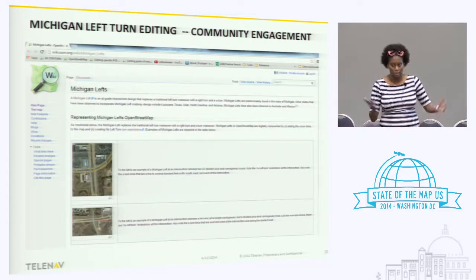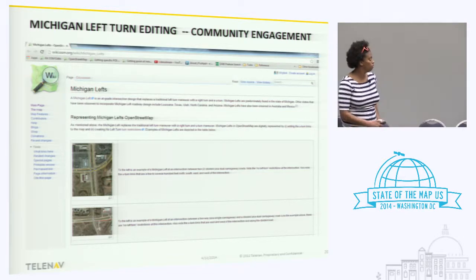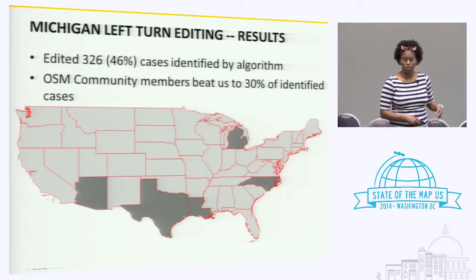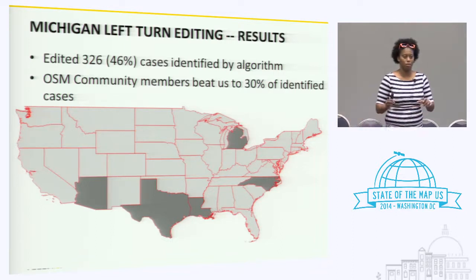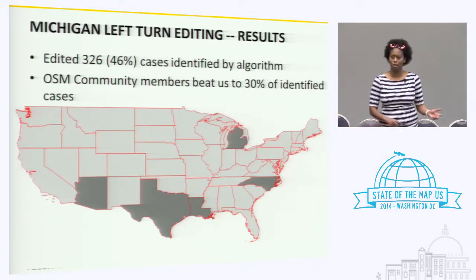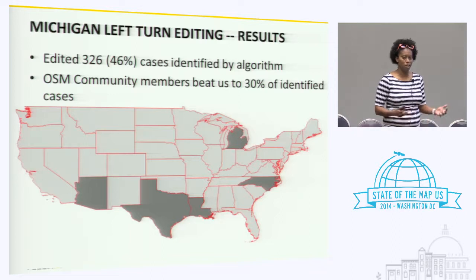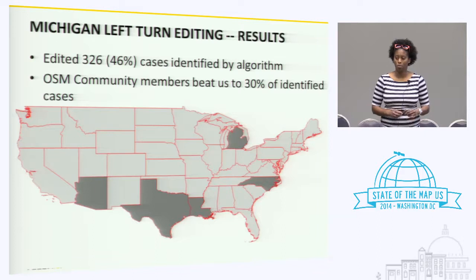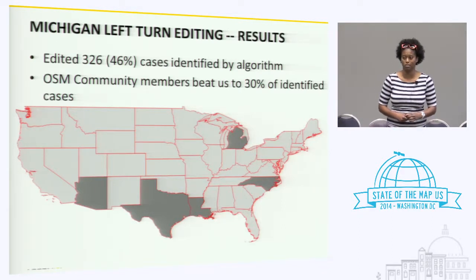We created turn restrictions preventing that left turn so routing engines know. We also created a wiki page based on previous experiences — things need to be documented. As a summary of our work, we found potential cases within five states. Of these five states, we found that maybe two states had legitimate cases. Of these cases, we updated maybe 50% of them, and other portions of the cases were updated by fellow OpenStreetMap editors — so other folks are vigilant in the data, too.